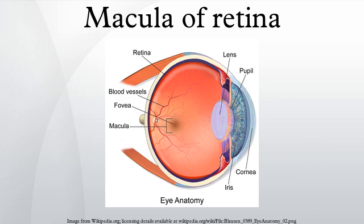The macula is subdivided into the umbo, fovea, parafovea, and perifovea areas. Near its center is the fovea, a small pit that contains the largest concentration of cone cells in the eye and is responsible for central, high-resolution vision.